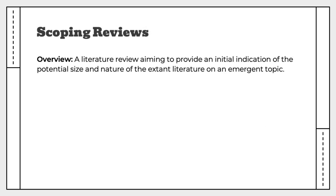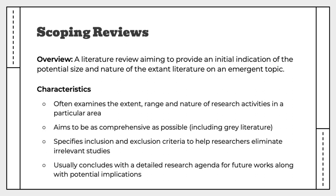Next, we have scoping reviews. These are literature reviews aiming to provide an initial indication of the potential size and nature of the existing literature on an emergent topic. Characteristics of scoping reviews include examining the range and nature of research in a particular area. These reviews aim to be as comprehensive as possible, and they tend to specify inclusion and exclusion criteria to help researchers eliminate irrelevant studies. Scoping reviews usually conclude with a detailed research agenda for future work.